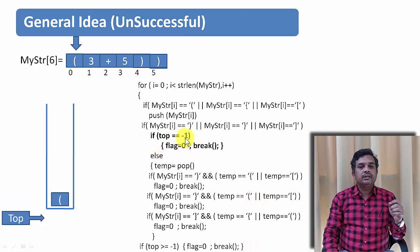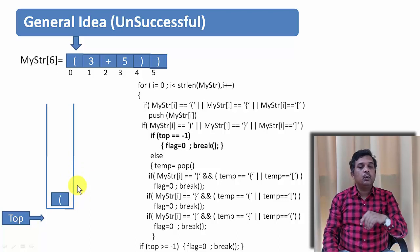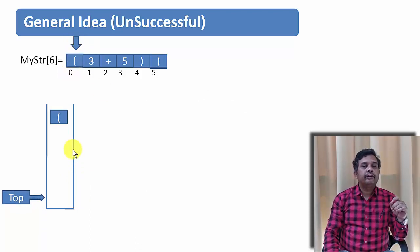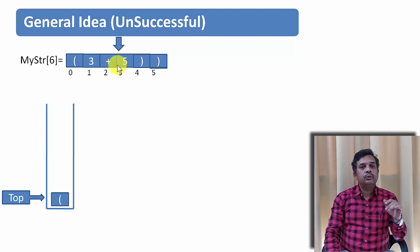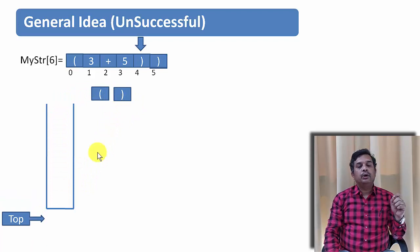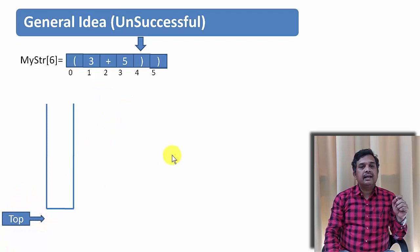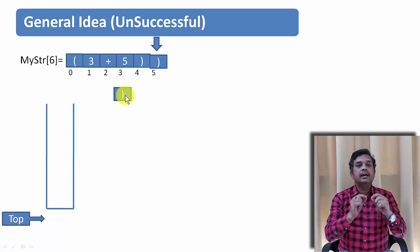One more case — top equal to minus 1, meaning the stack is empty but a right bracket appears. Scanning: first character is a left bracket — push it. Then value 3, operator plus, value 5 — nothing to do. The next is a right simple bracket — pop and both matched. But now the top is pointing to minus 1, meaning the stack is empty. There are still more characters, and the last is another right bracket. When we try to pop, there is nothing in the stack to compare. So this expression is also not well parenthesized.